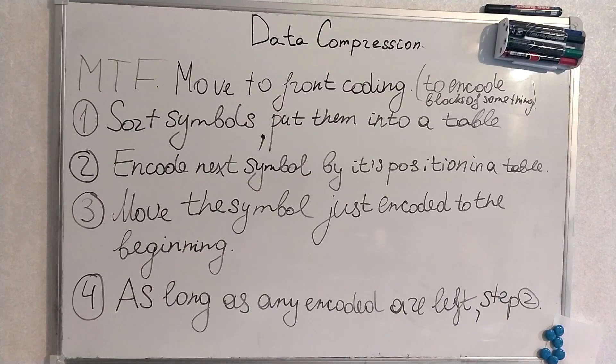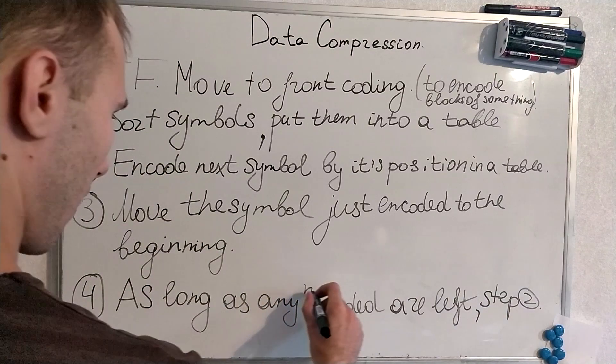We sort all symbols and put them into a table. We encode the next symbol by its position in the table and we will just move our symbols to the beginning. That's why it's called move to front. As long as any not encoded are left, follow to step 2.